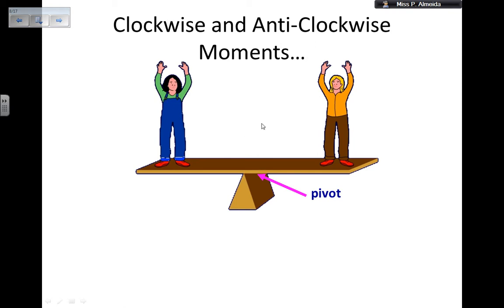For example here, I have both moments happening at the same time. I have the pivot, the place where the turning effect is going to take place, and I have two forces.